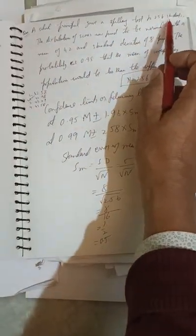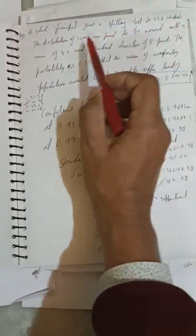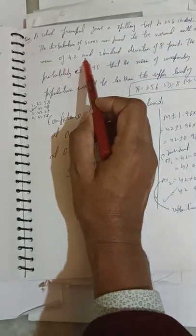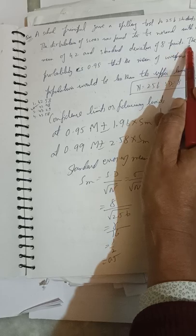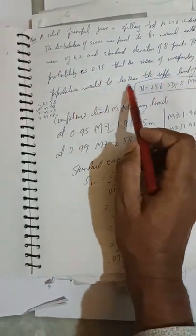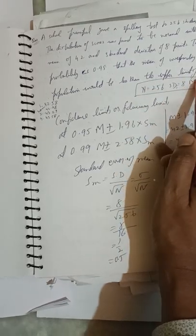Now we move to next question. A school principal gave a spelling test to 256 students. The distribution of scores was found to be normal with a mean of 42 and standard deviation of 8 points.